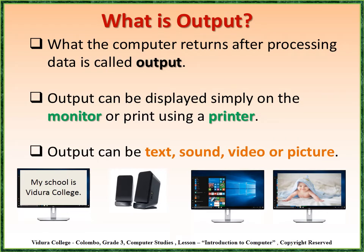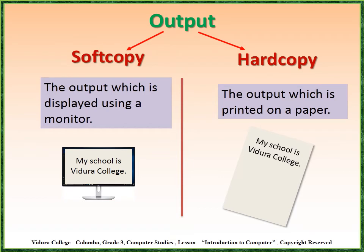What is output? What the computer returns after processing data is called output. Output can be displayed on the monitor or printed using a printer. Output can be text, sound, video or picture. You can get output as a soft copy as well as a hard copy. The output displayed on a monitor is a soft copy — you can see it on the monitor screen but you can't touch it. The output printed on paper is a hard copy — you can see and touch it.